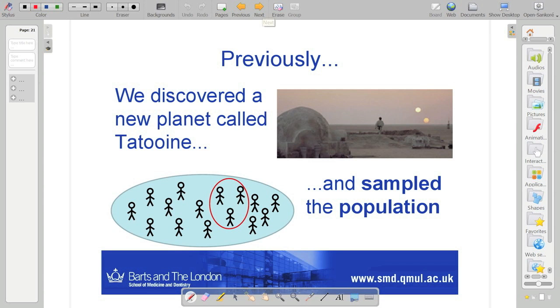So previously we discovered this planet, we landed on it, we sampled the population and we found out some information about them. Our research question was and still is: what are the characteristics of this population? What characterizes it? Are there certain attributes that that population has that help us to know anything about them?